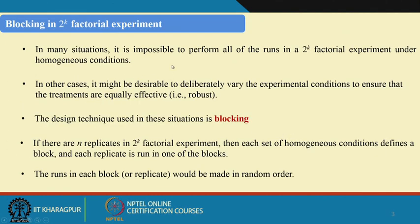In many situations it is impossible to perform all 2^k factorial experiments under homogeneous conditions. In other situations, the experimenter deliberately varies the experimental conditions to ensure the product or item produced works effectively under different situations — this is the concept of robust design. When you have insufficient resources such as raw materials or operators, or when you deliberately create heterogeneous situations, the design technique effectively used is called blocking.